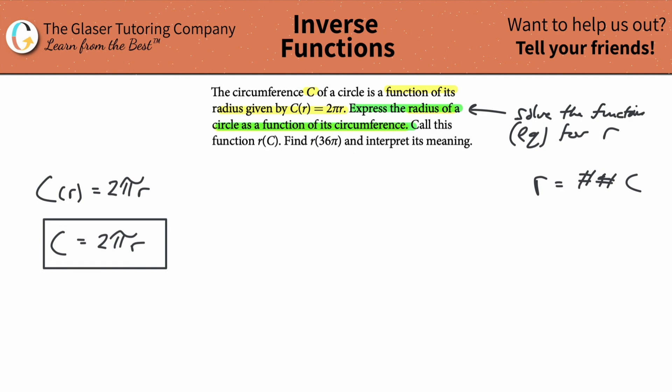So if we look at this original thing, if I had to solve this whole equation for r, what I would do is first copy it down, and then I know I got to get rid of the 2π, so I got to divide that out